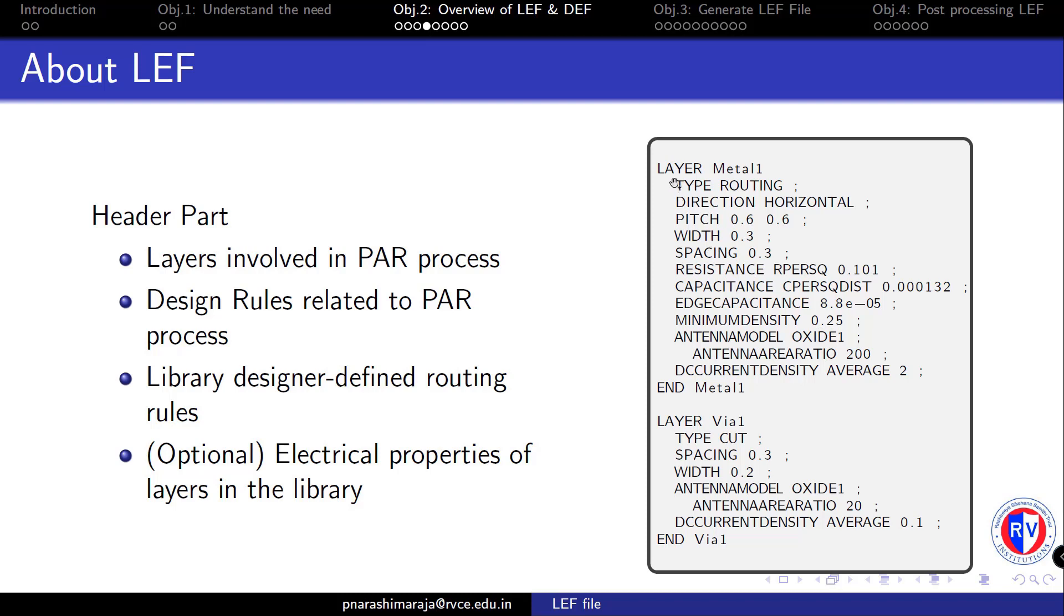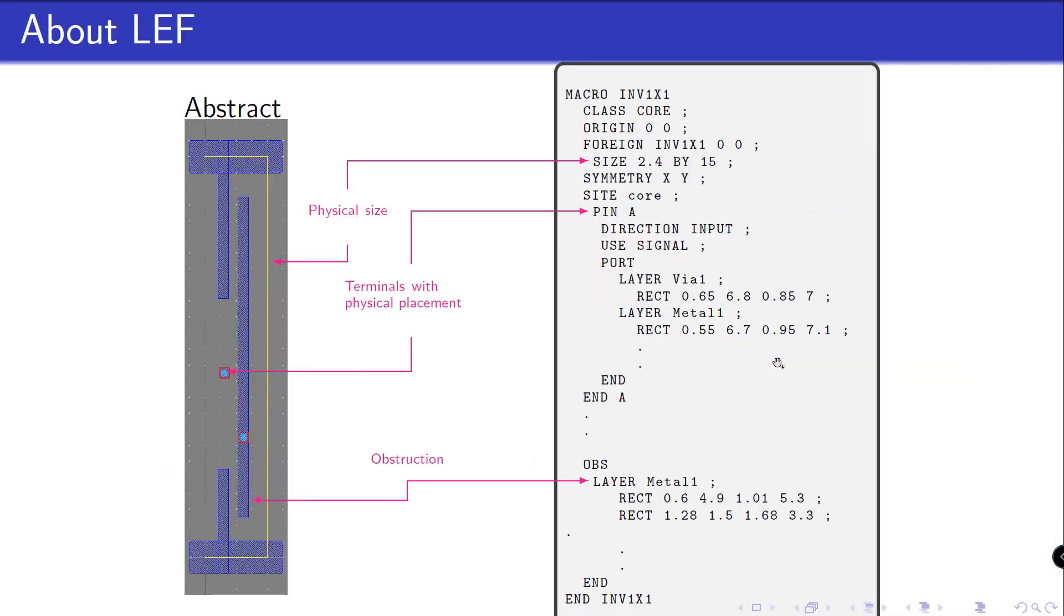And all of these information are basically shown in a snippet towards the right side. The cell descriptive part basically contains information about the abstract view of each of the cells that we have in our library.